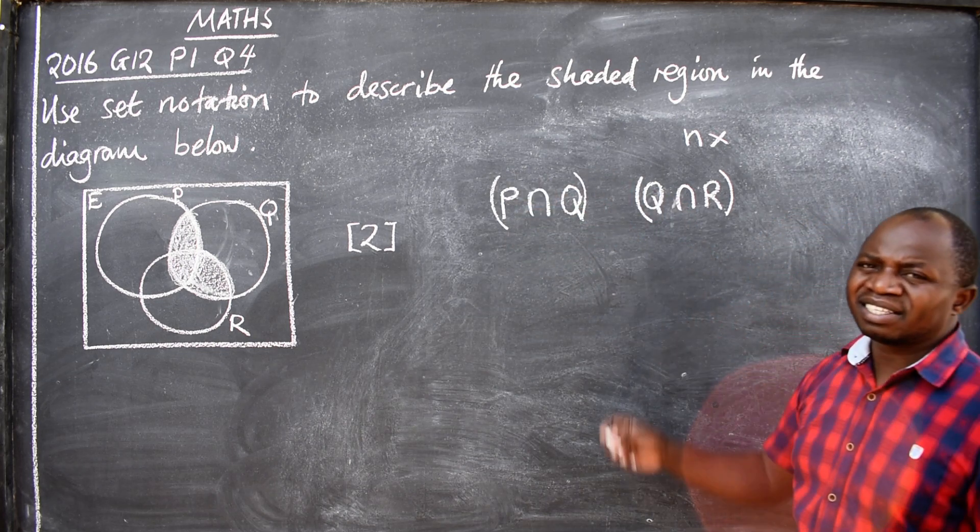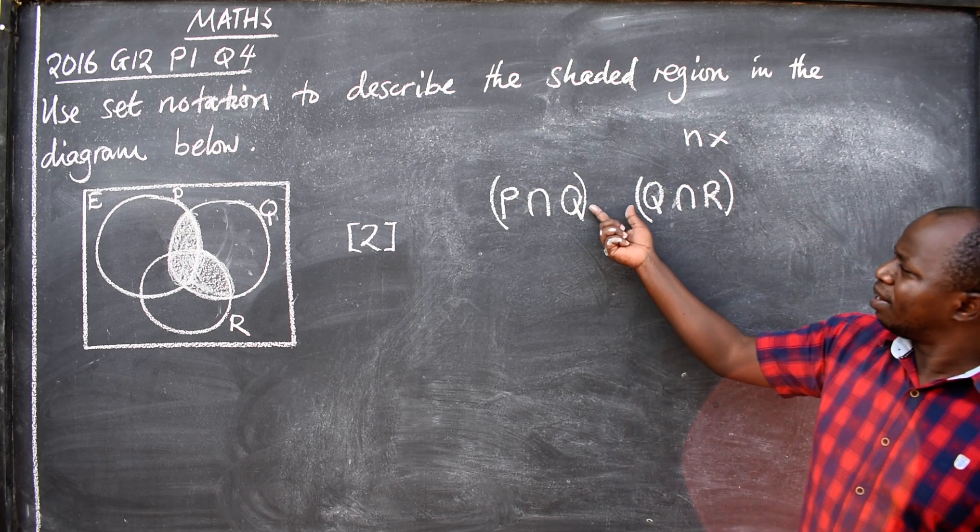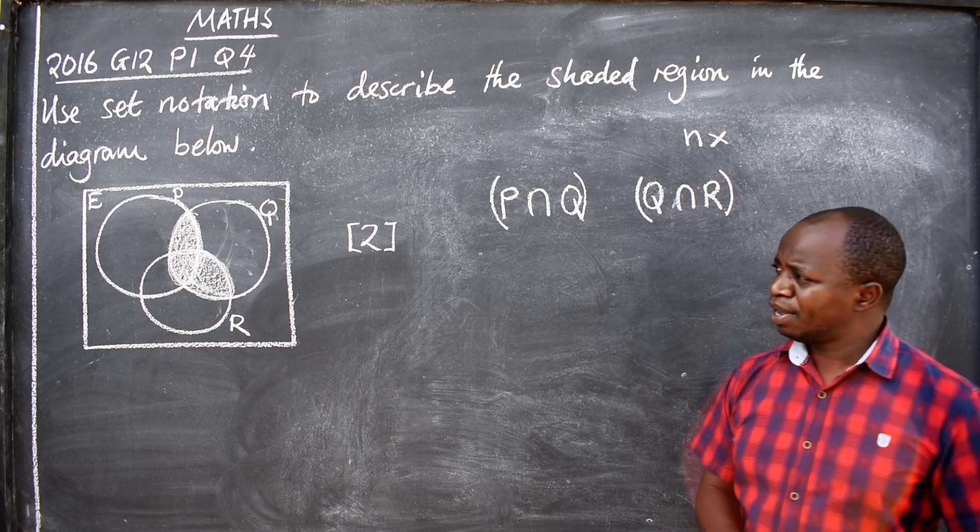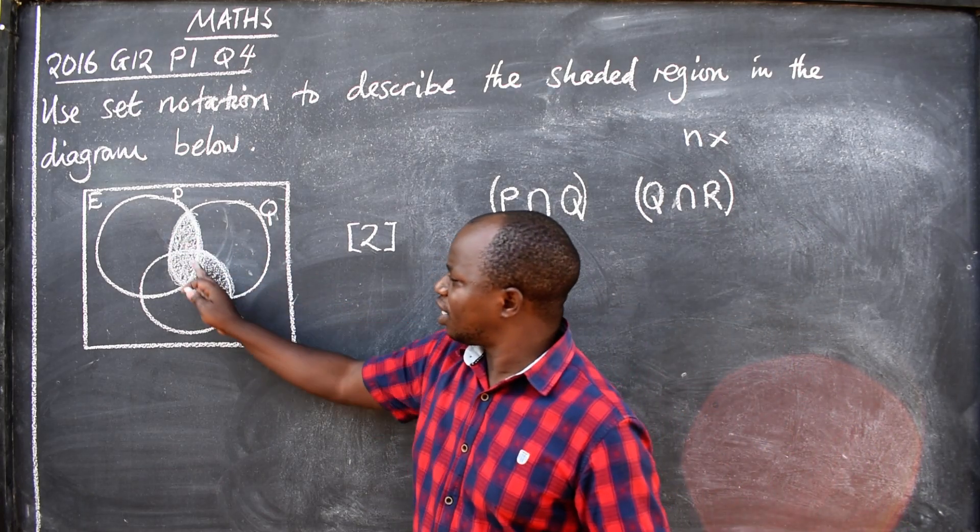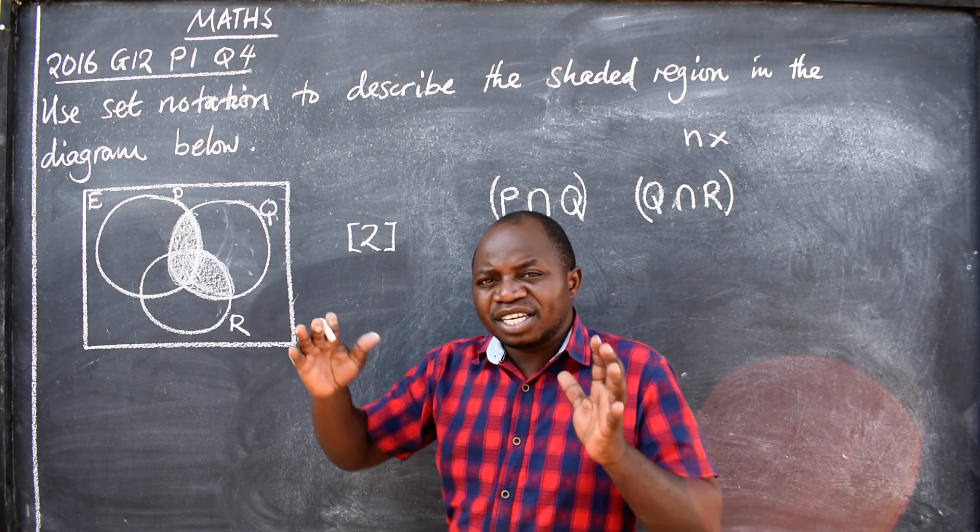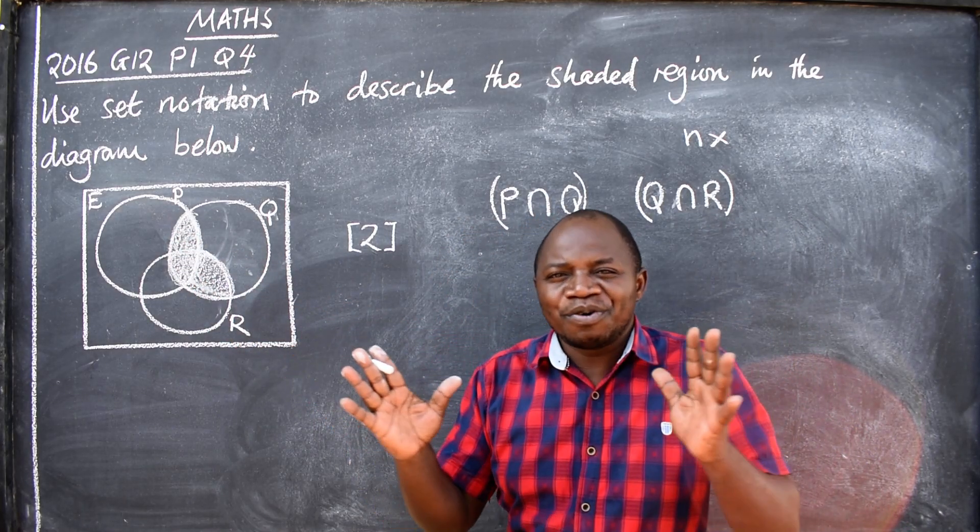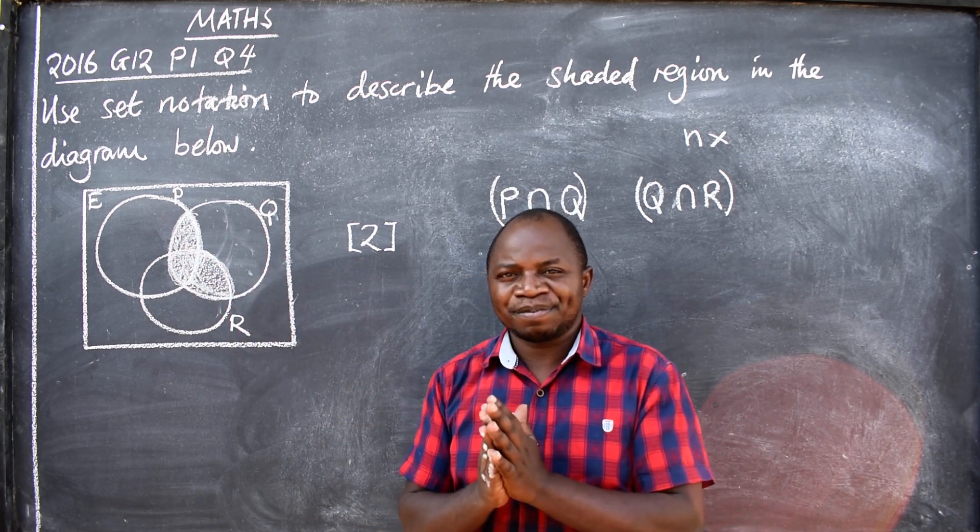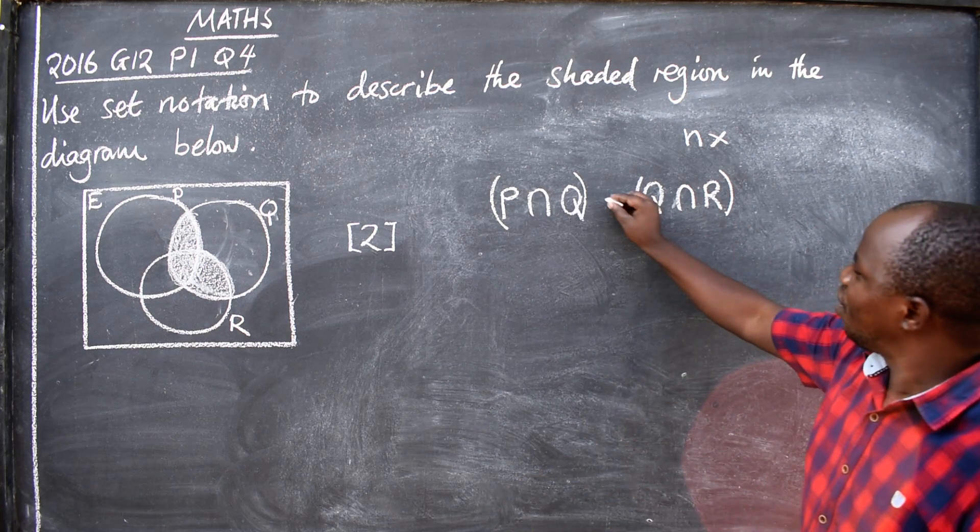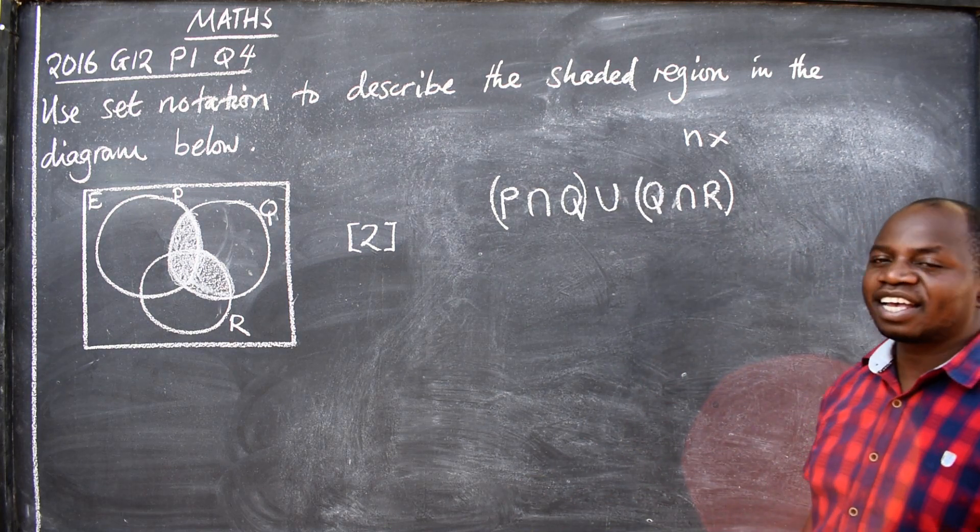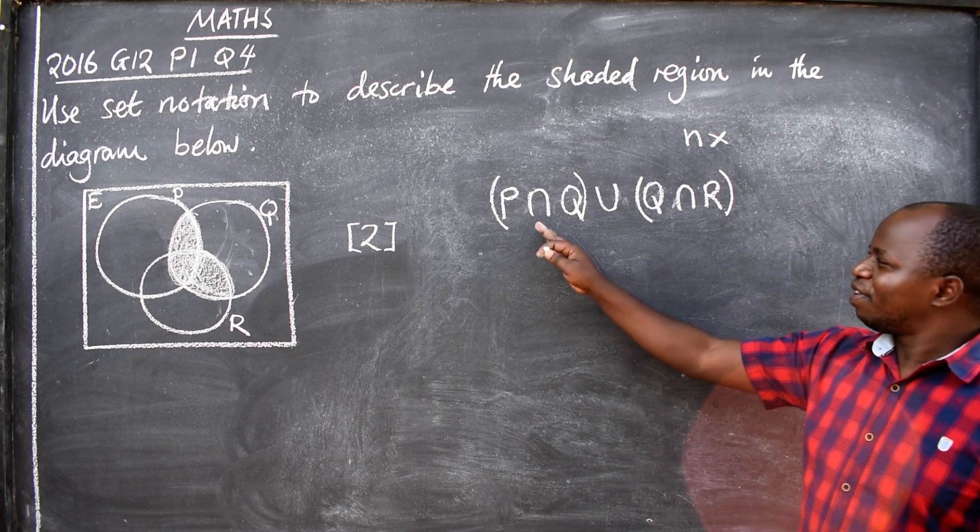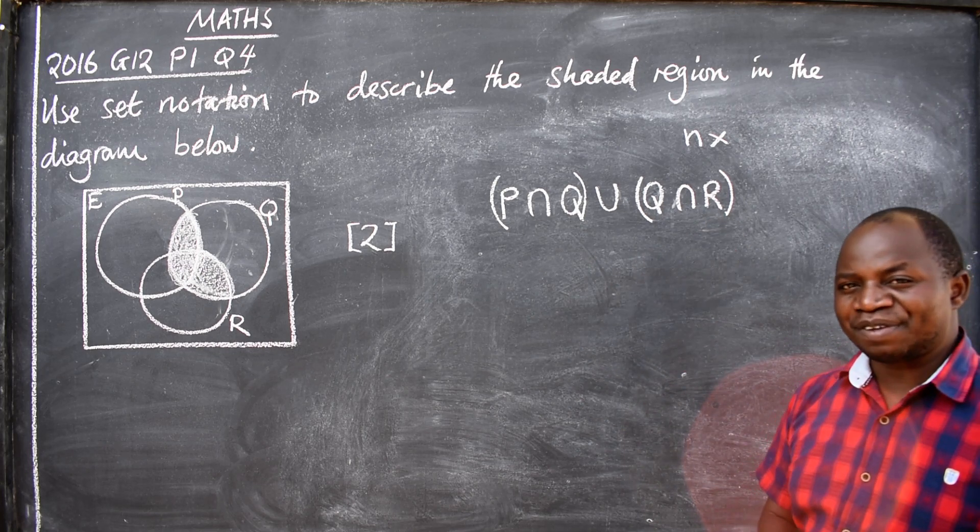There must be a symbol in between to show that these are together, because they are not shaded separately but they are shaded together. So what symbol will that be to put the two sets together? It is union, like that. So this is the correct answer.